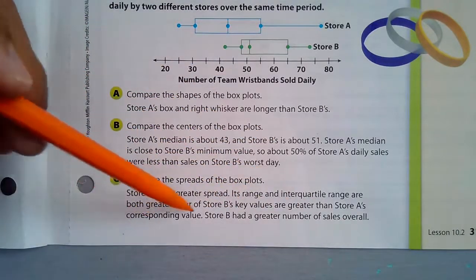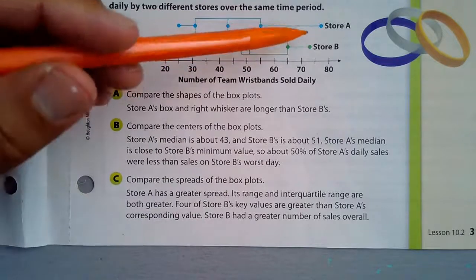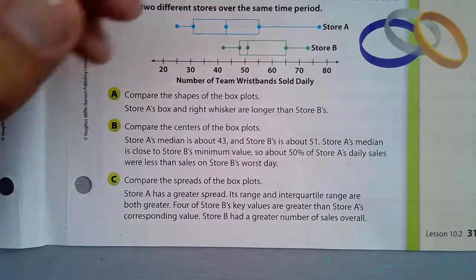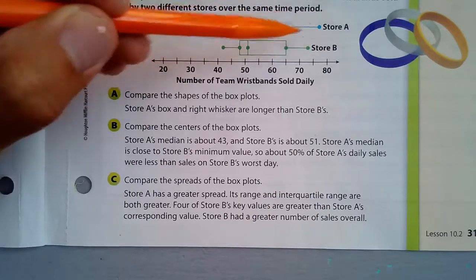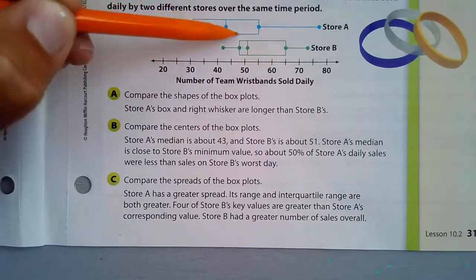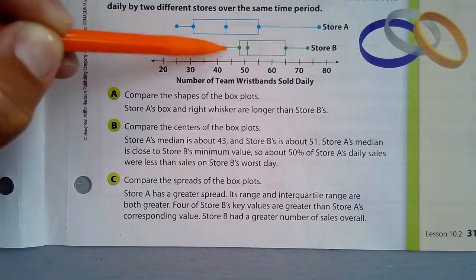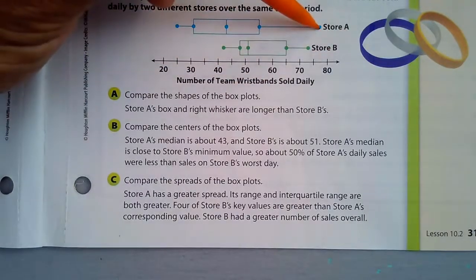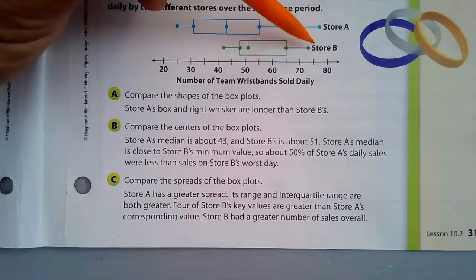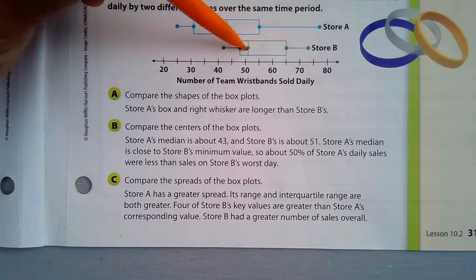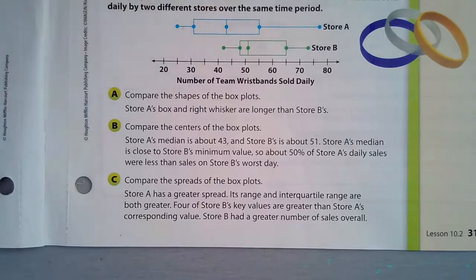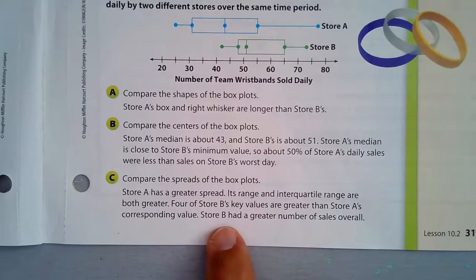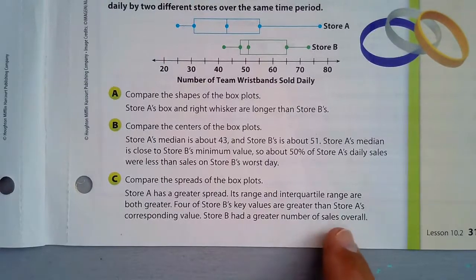Looking at the corresponding values: these match up. Store A has a larger value for one measure, but the other four corresponding values — minimum, Q1, median, Q3, and maximum — are greater for Store B. So Store B has a greater number of sales overall.